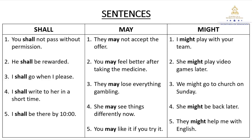Sentences with might. One: I might play with your team. Two: She might play video games later. Three: We might go to church on Sunday. Four: She might be back later. Five: They might help me with English.